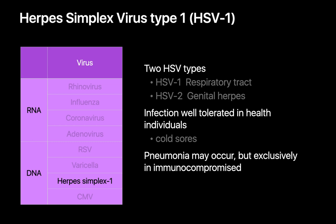HSV type 1 is one of two HSV types, the other being HSV type 2 which is associated with genital herpes. Many individuals infected with HSV type 1 are asymptomatic, though some may develop cold sores. In immunocompromised populations, however, HSV type 1 can be a much more serious illness, and pneumonia may occur.